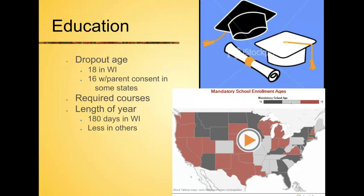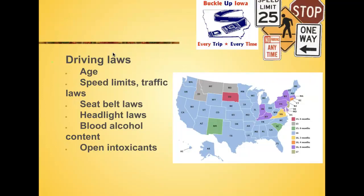Education laws vary as well. In Wisconsin you can drop out of high school at 18, or at 16 with parental consent in some states. Required classes differ — in Wisconsin you must pass a citizenship test before you can graduate, while other states don't have that requirement. Some states require certain classes that others don't. The length of the school year also varies — Wisconsin has 180 days, while other states have fewer.